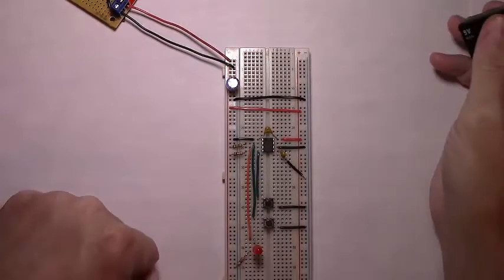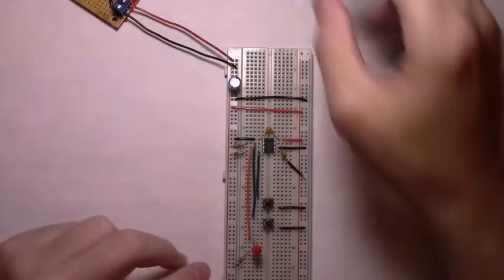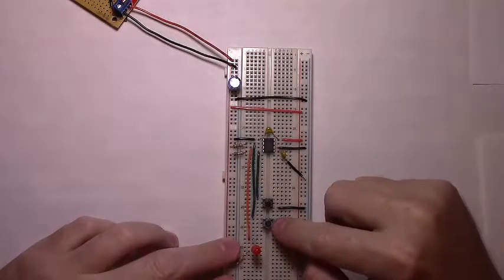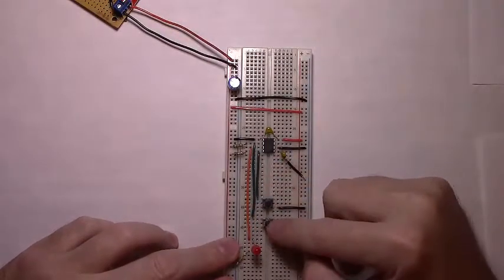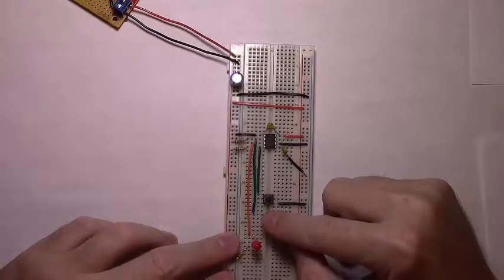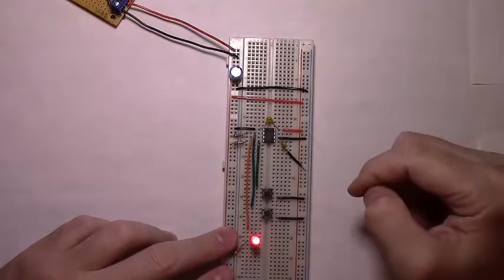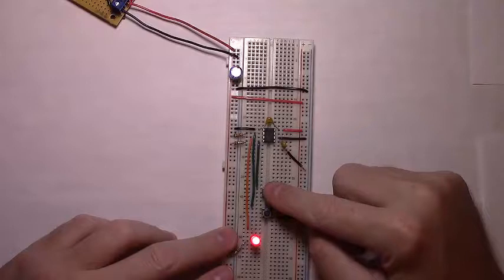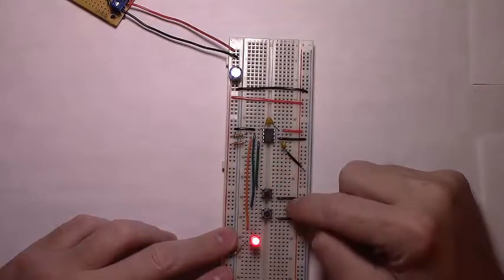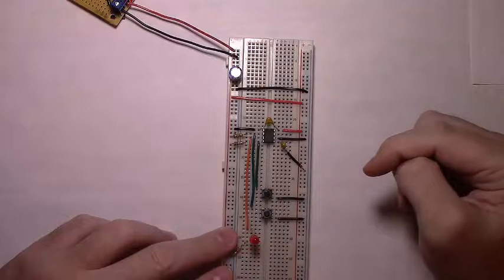We should now be able to add power to our circuit and push the bottom button connected to the trigger. It should turn the LED on, and it does. We can push the top button connected to reset, the master reset, and the LED will go out.